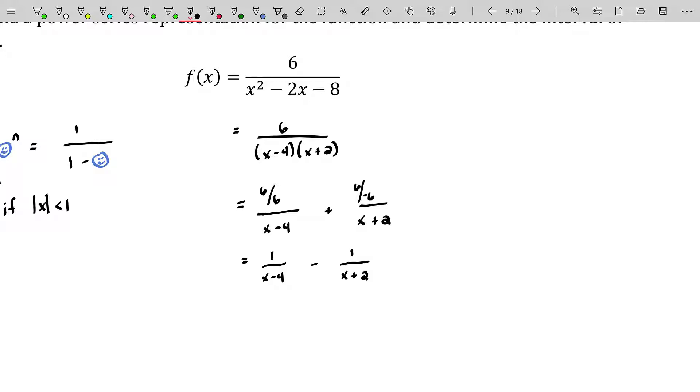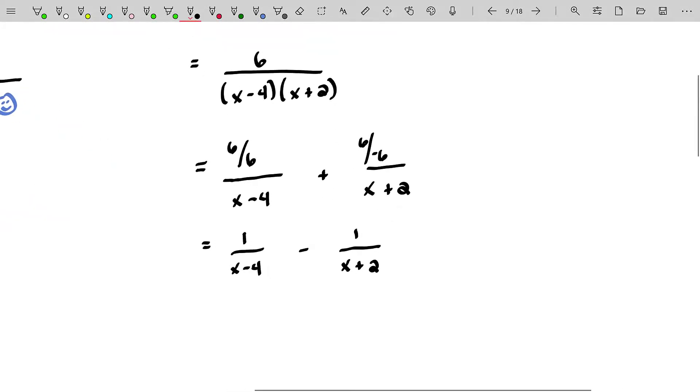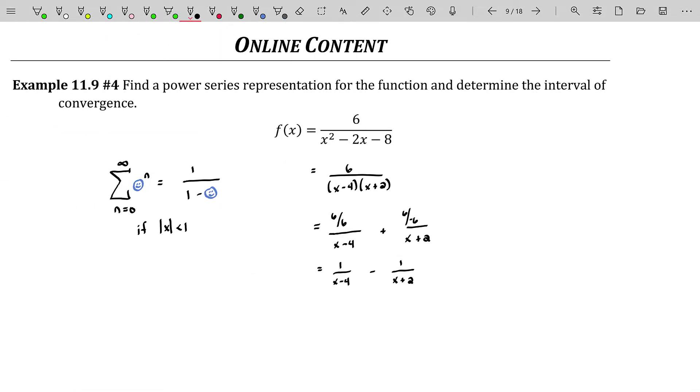Now, I do have to state here, the Heaviside cover-up method is what I would normally call a shortcut. Shortcuts, to me, are things that sometimes work but don't always work. The method you were taught to do partial fraction decomposition is a method that will always work. As long as you did a comparison of coefficients or solve the system of equations or something like that, that is a method that will always work. The Heaviside cover-up method, which is what we used here, will only work in very special situations. I'm not going to get into when it works because that's not the point of this video. But you can look it up. It's actually done by a mathematician by the name of Heaviside, spelled that way. So you can look it up. Heaviside cover-up method.